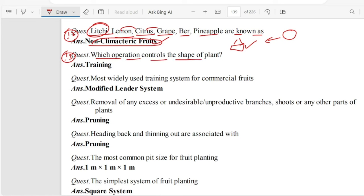Which operation controls the shape of the plant? Training. If you have training, you can control the plant and control the shape of the plant.